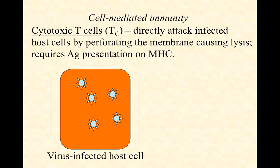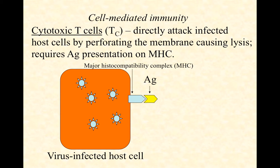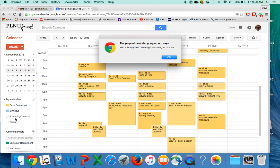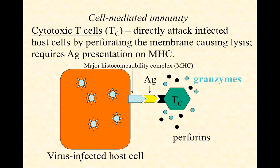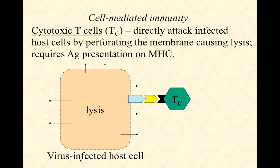So they're searching for host cells that are displaying the exact same antigen that activated them in the first place. Here they're displaying some antigen on MHC as a cry for help. The cytotoxic T cell will eventually find these antigens being displayed on MHC on the surface of the infected cells. They're going to secrete two types of proteins — we call them perforins and granzymes. Perforins perforate the membrane; they punch holes in it. Granzymes diffuse in through those holes and stimulate apoptosis, which is cell suicide, programmed cell death. And so the result — kaboom — the cell is going to lyse.